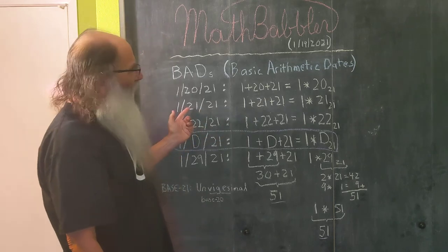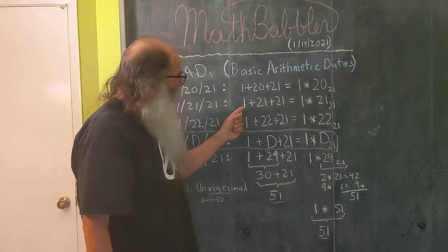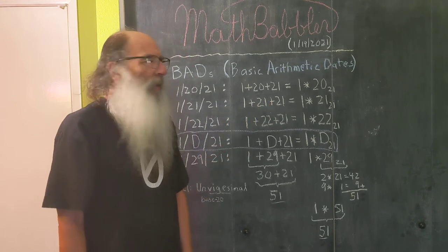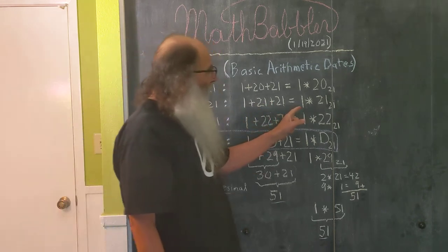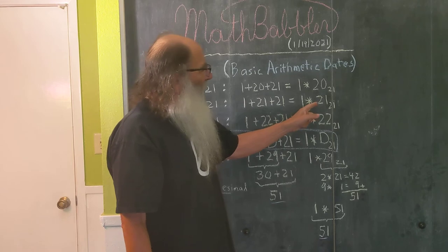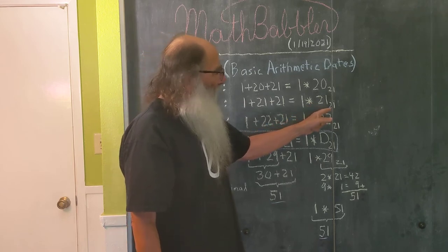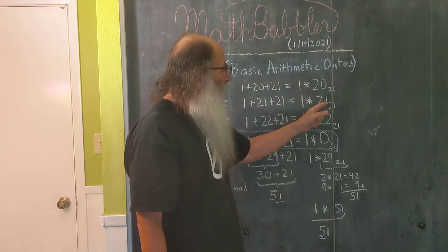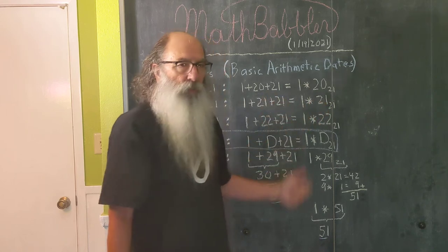Move on to the 21st. Well 1 plus 21 plus 21, that's 43. Well over here on the right side, we have two units of 21, which is 42, plus the 1 gives us 43. 43 times 1 is 43.